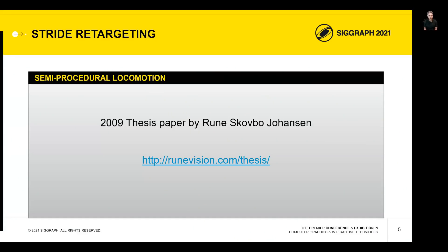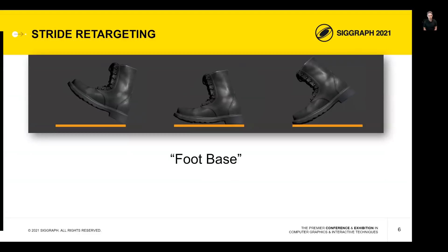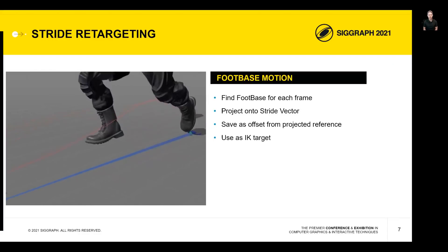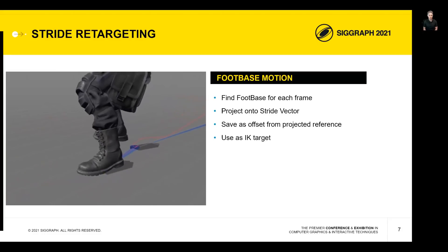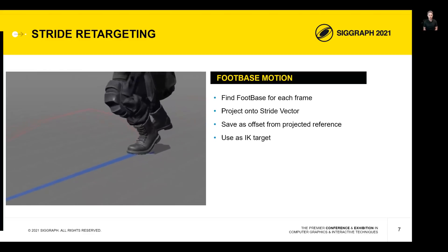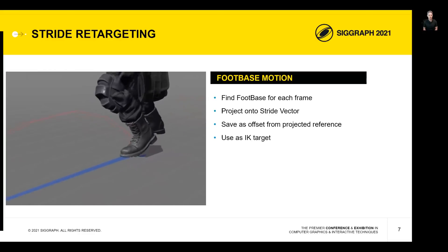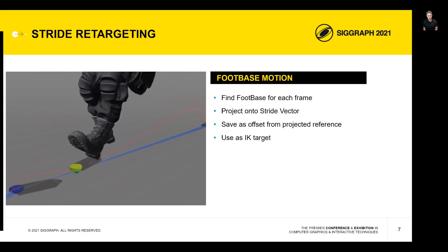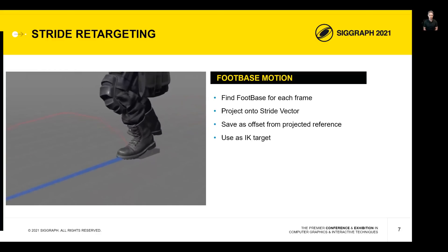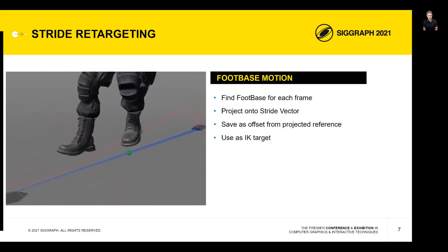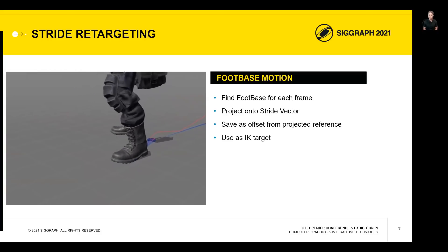Our stride retargeting system was based in large part on the work of Rune Johansson in his 2009 thesis paper. The core concept was to establish a 'foot base' — think of it like the boards of an elliptical machine. They move along with the feet, always in contact with the feet, but remain mostly parallel to the ground. As an offline process, we'd calculate the foot base position for each frame of the animation, project that onto the vector from the previous step to the next step, calculate the offset in stride-relative coordinates, and save it out. At runtime, we could recreate the foot base location using new footstep positions and use it as the IK target to move the leg to.